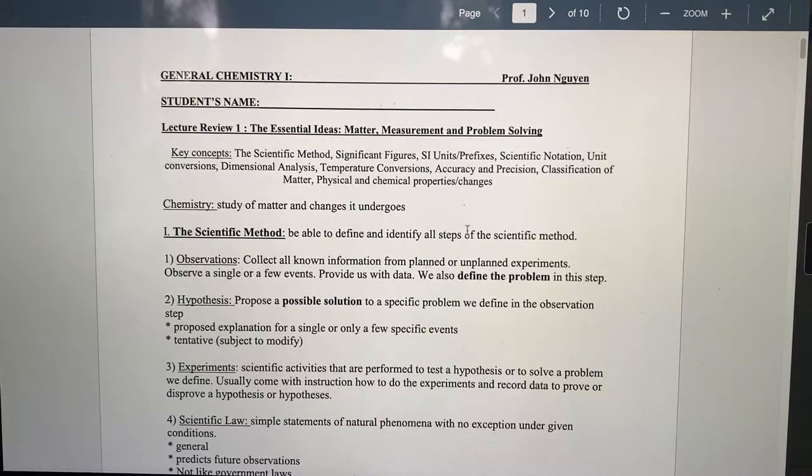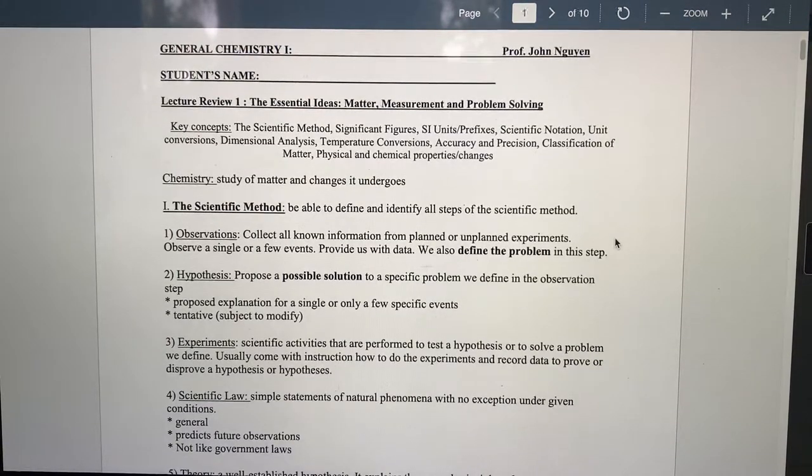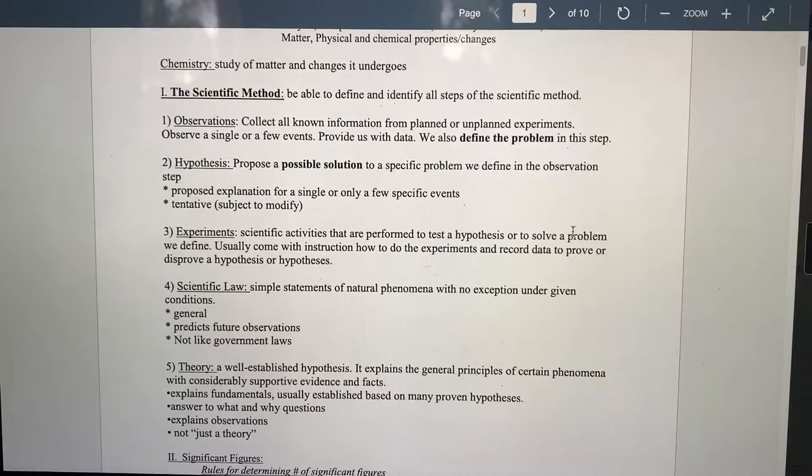Scientific method - every time we do something, we need to set up a method, and especially science, we have to have a method so we can keep track of all the results. There are five components in scientific methods.